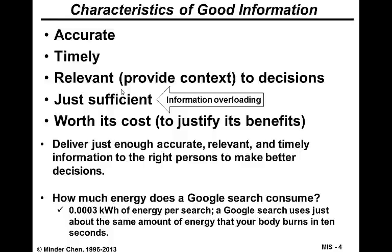The fifth characteristic is that good information should be considered worth its cost. We always have to bear in mind that capturing, storing, and processing information costs us, so we need to justify those information processing activities with their benefits. If you ask users whether they need a piece of information, they'll likely say yes — but if you tell them it will cost extra work and money to develop that additional feature, they may reconsider. Always bring the cost issue into your discussion when discussing information systems.